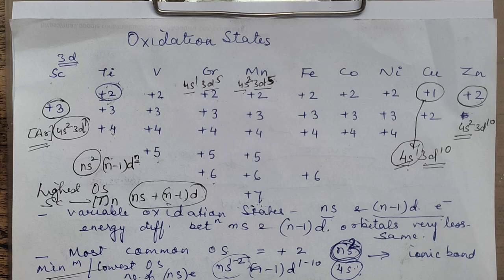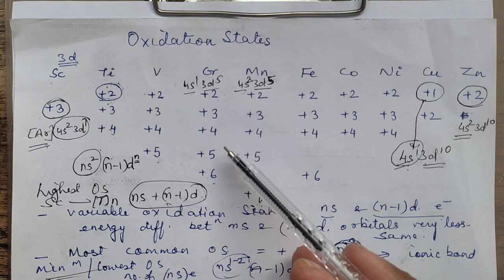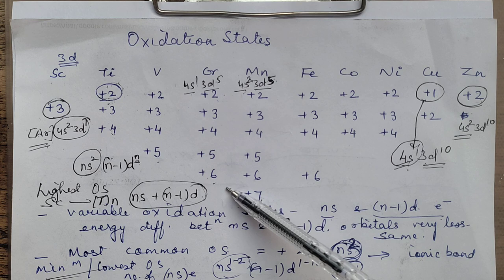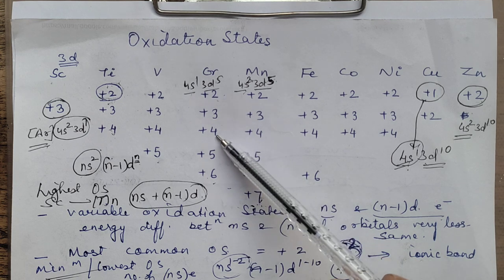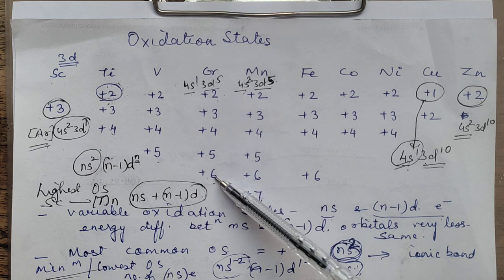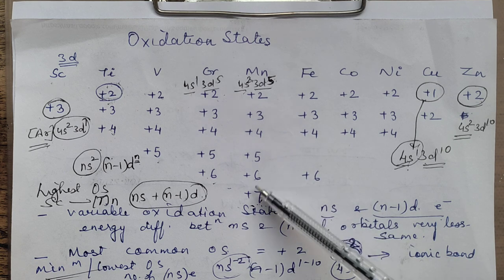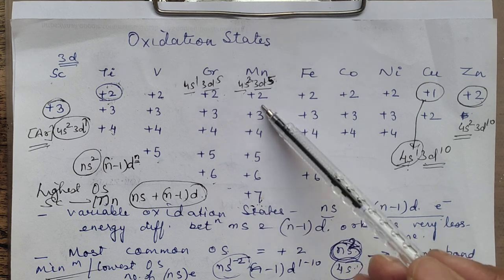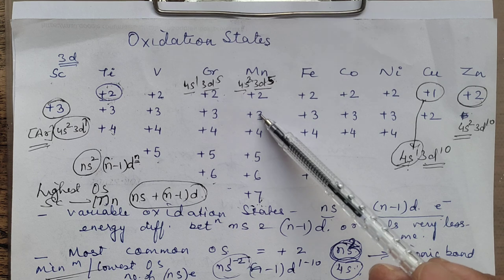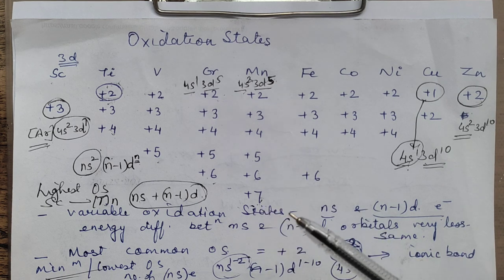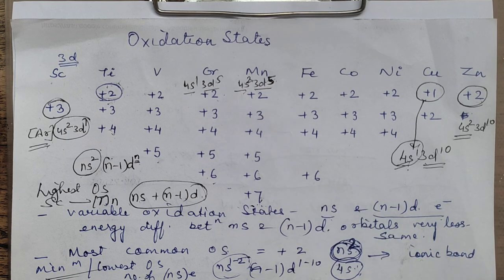For example, chromium exhibits oxidation states 2, 3, 4, 5, 6 — and Mn: 2, 3, 4, 5, 6, 7. The successive oxidation states the element exhibits all differ by 1, so the difference is just 1.